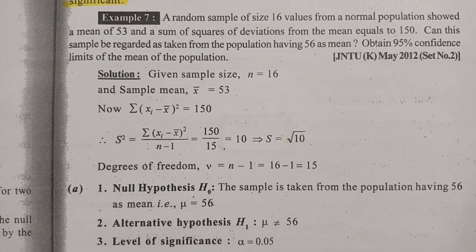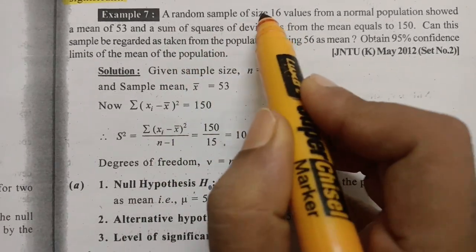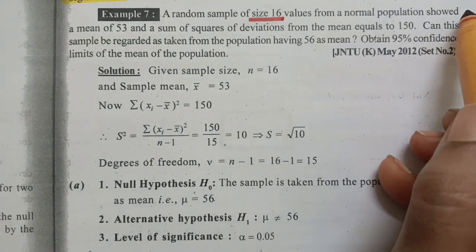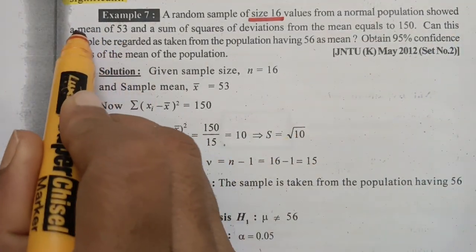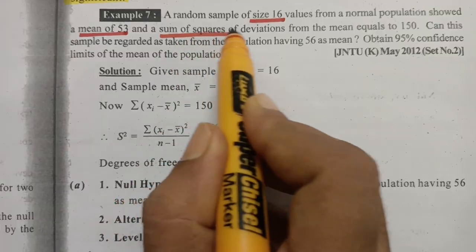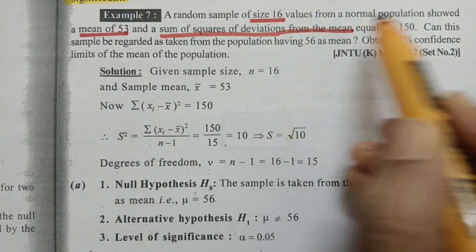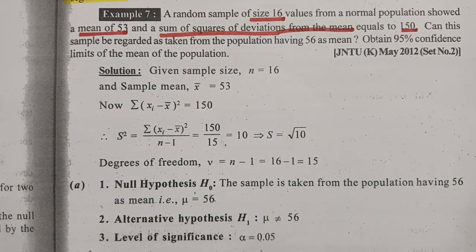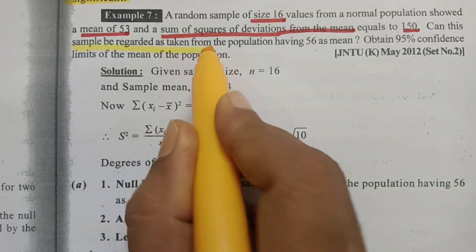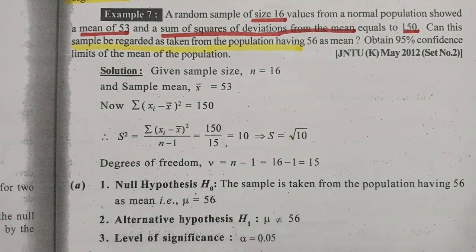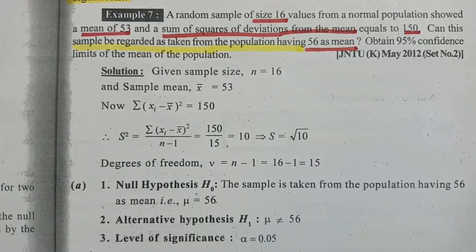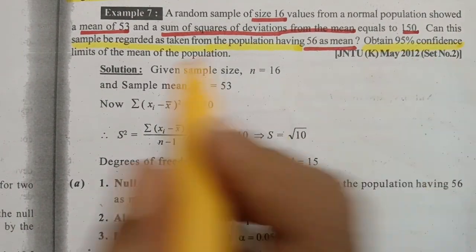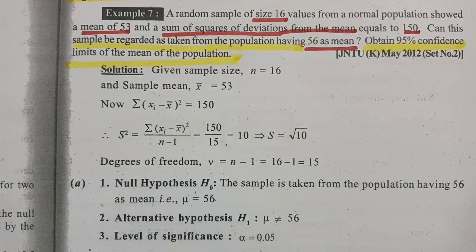I have already taught you 6 examples, and today I am going to teach you how to solve this 7th example. A random sample of size 16 from a normal population shows a mean of 53, and the sum of the squares of the deviations from the mean equals 150. Can this sample be regarded as taken from a population having mean 56? We also need to obtain 95% confidence limits of the population mean.